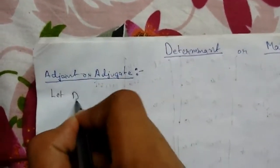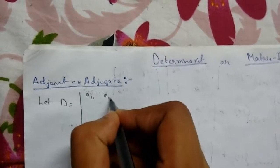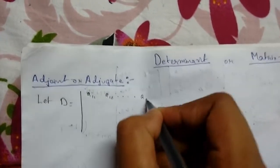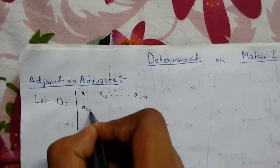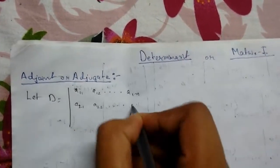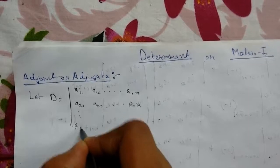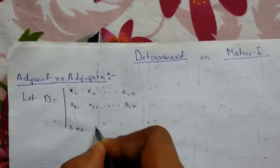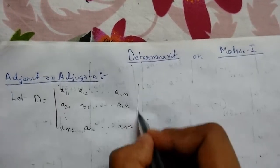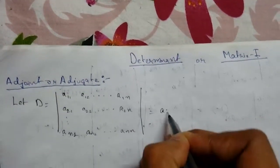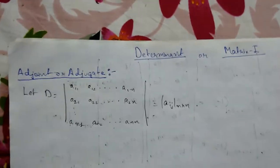Let our determinant D be: a11, a12, and so on up to a1n; a21, a22, a2n; and similarly an1, an2, ann. So this is our determinant of |aij|, an n cross n determinant.